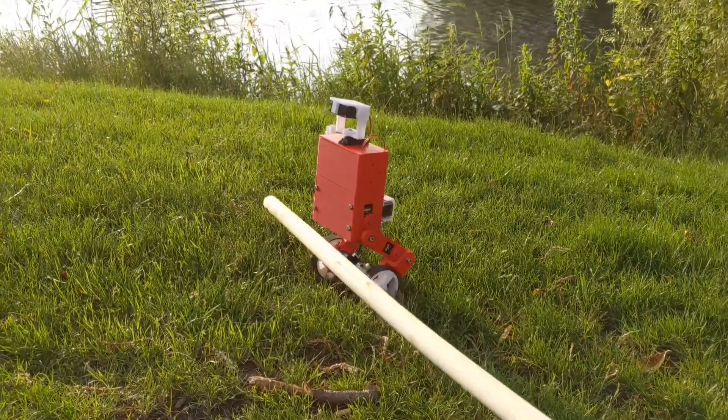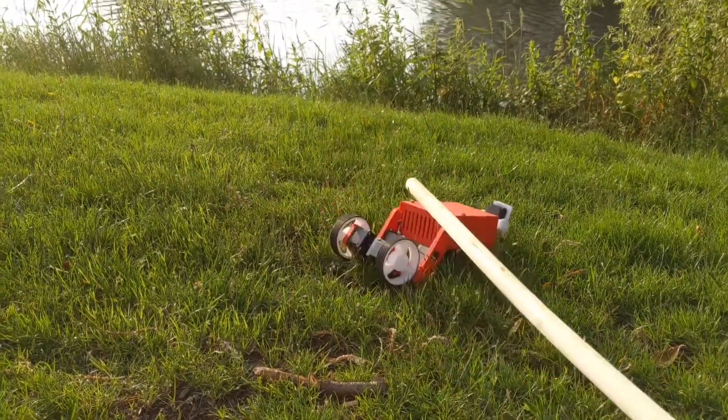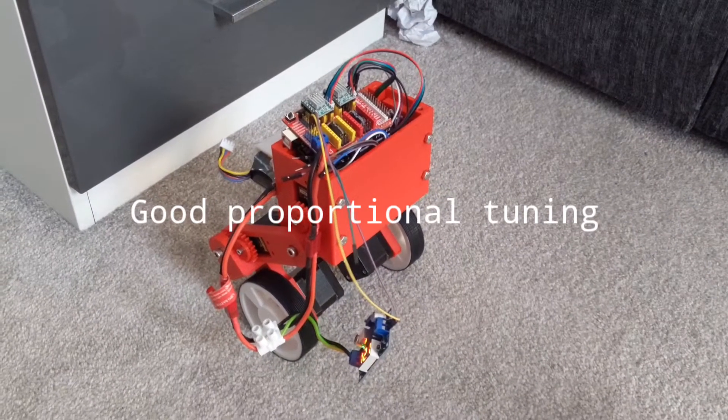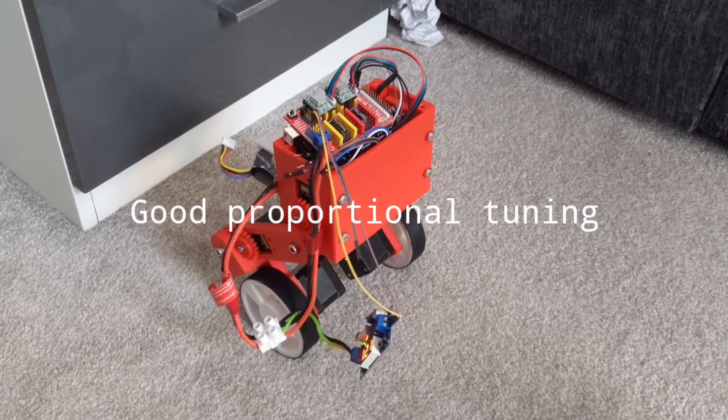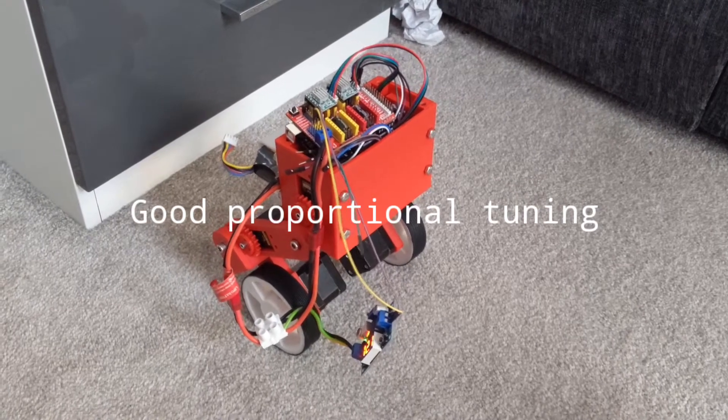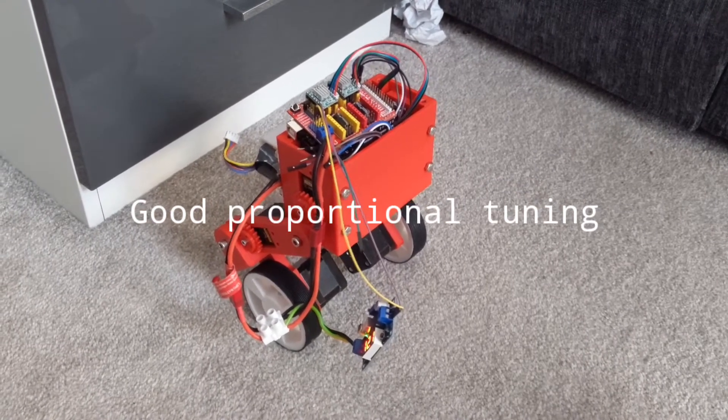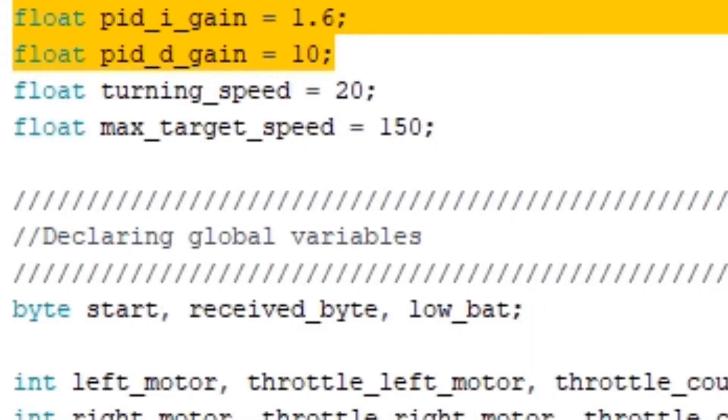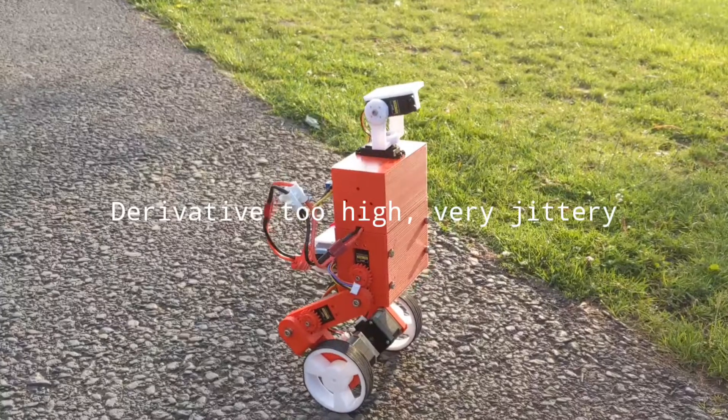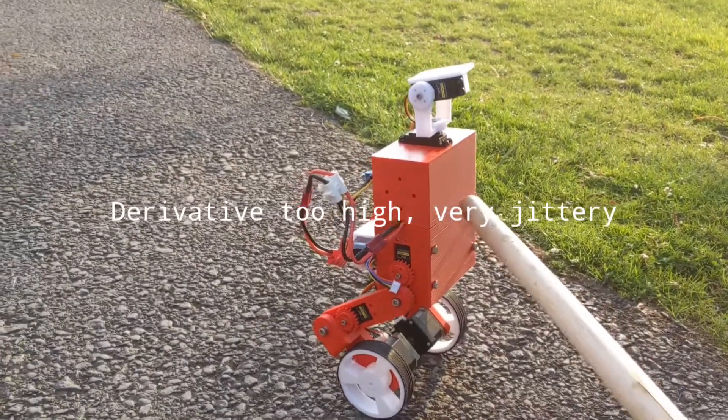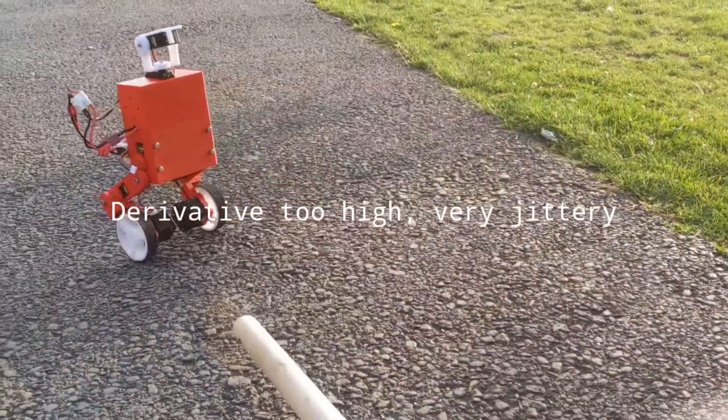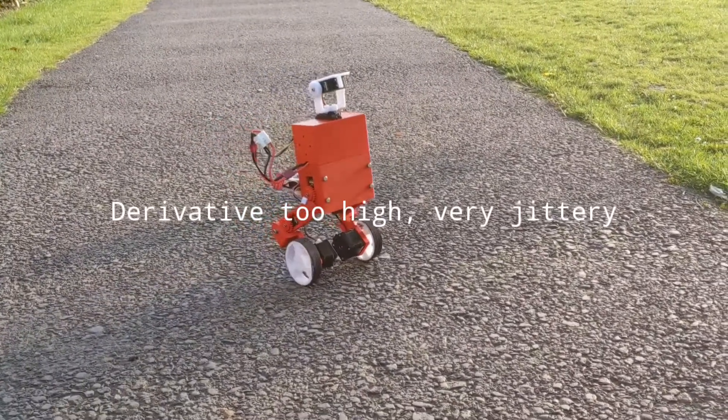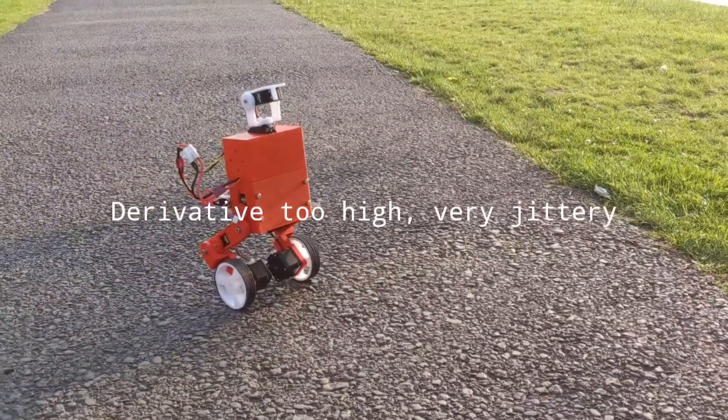At this point we're not looking for it to react when it's being pushed, we just want it to be stable when it's not interacting with anything else. Once you've got that pretty stable and it's able to balance somewhat, then you want to move on to the I and D terms or the integral and derivative terms. The derivative helps us tune out some of the shakiness, so we want to tune this just right so that it's not shaky, it doesn't oscillate too much, and it recovers quickly when pushed.